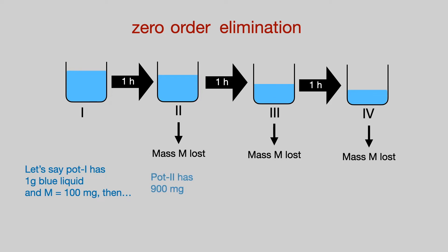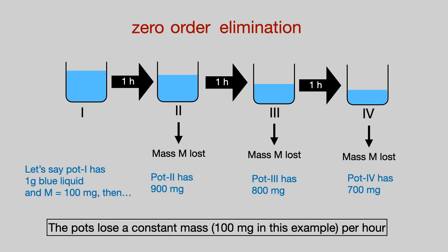Then pot 2 contains 900 milligrams. Pot 3 contains 800 milligrams. And pot 4 contains 700 milligrams. So the pots lose a constant mass per time with zero order elimination.